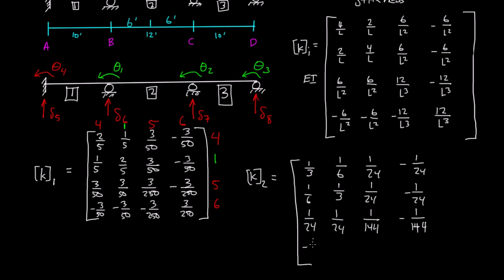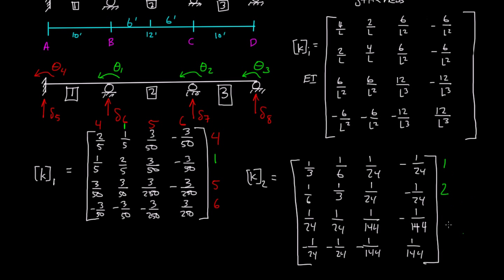And then finally: negative 1 over 24, negative 1 over 24, negative 1 over 144, and 1 over 144. I'm going to label the rows and columns according to element 2. Element 2 has degrees of freedom 1, 2, 6, 7, so I'm going to write 1, 2, 6, 7 for both the rows and columns.